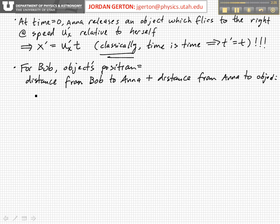So for him, x now is equal to velocity times time. That's Anna's position with respect to Bob plus the object's velocity times time. And this is now the object's position relative to Anna.